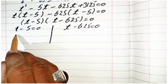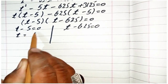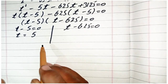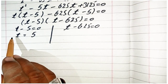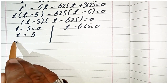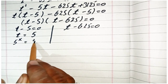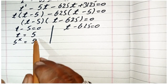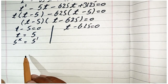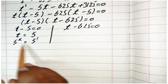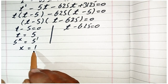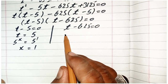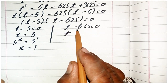Setting t minus 5 equal to 0 gives t equal to 5. Recalling that t equals 5 power x, we have 5 power x equal to 5 power 1. Since 5 has no written power, it means the power is 1. The base is the same, so the powers are equal, giving x equal to 1.